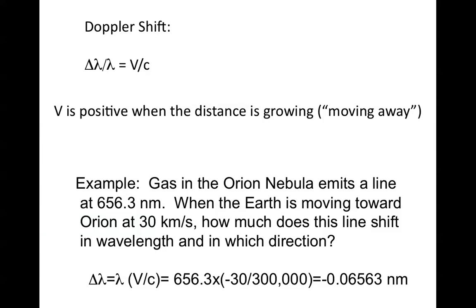Let's just look at the quantitative relationship here. The Doppler formula says that the change in wavelength divided by the wavelength for electromagnetic radiation is equal to the velocity that the object is moving towards or away from you, divided by the speed of light. The convention is that the velocity is positive when the distance is growing, when the object is moving away, because the change in distance is increasing, so that's a positive velocity.